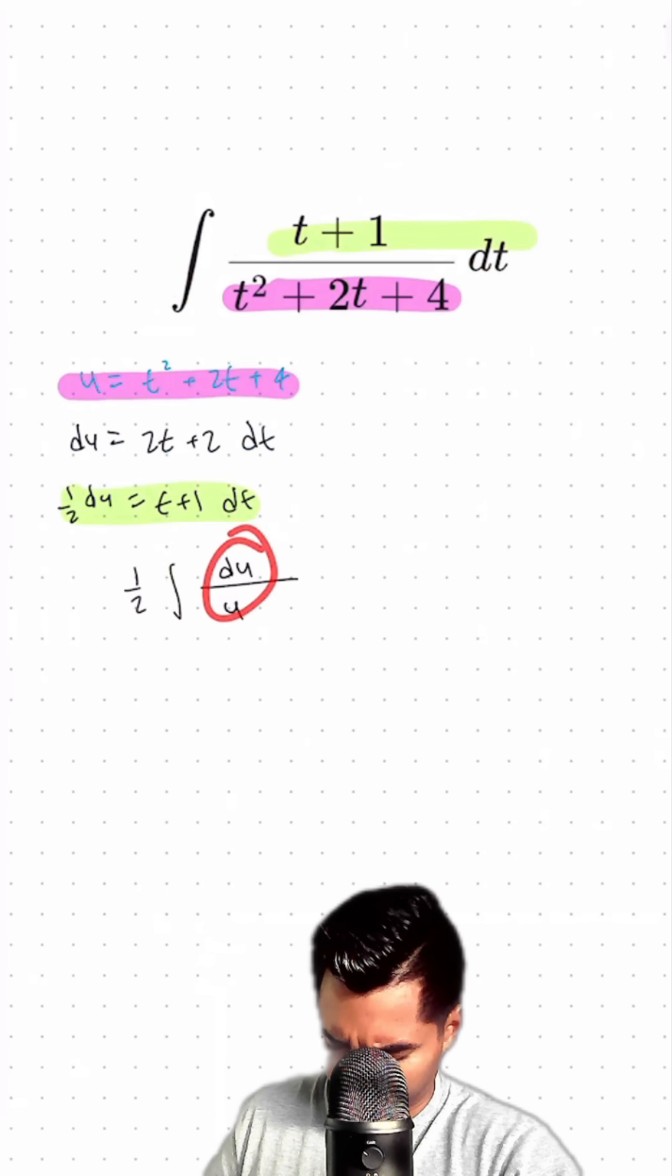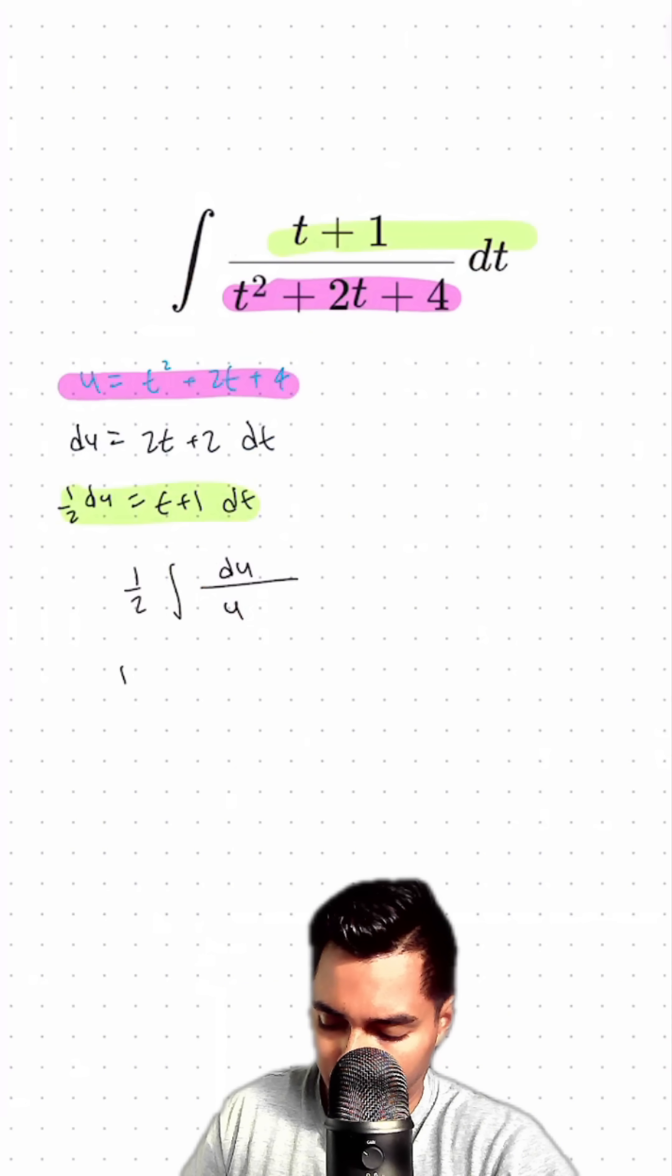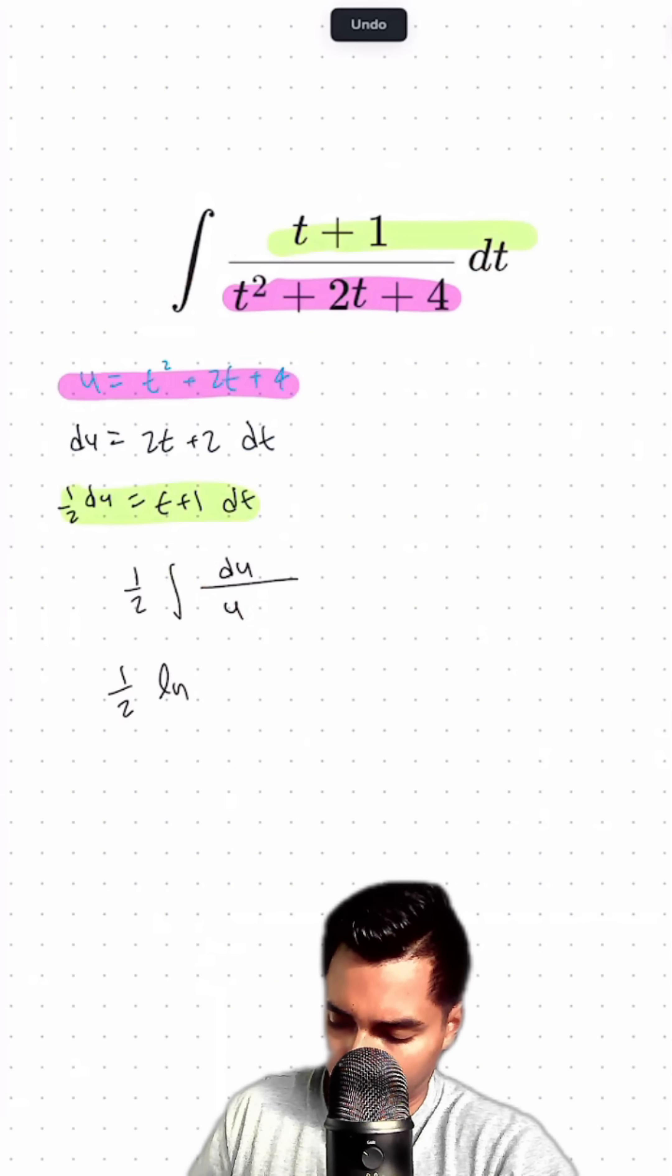All right, and the integral of 1 over anything is just the ln of anything. So this evaluates to 1 half times the natural log of the absolute value of u plus c.